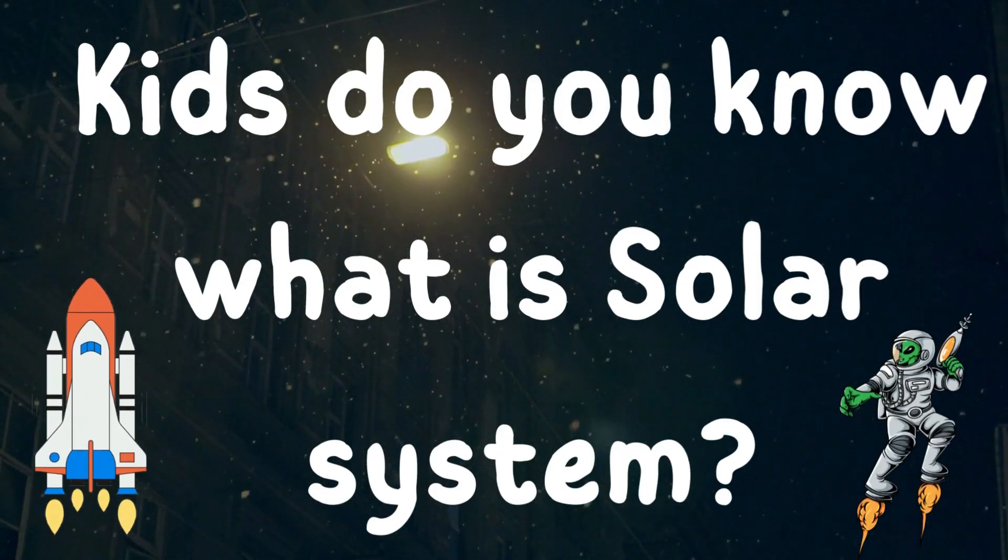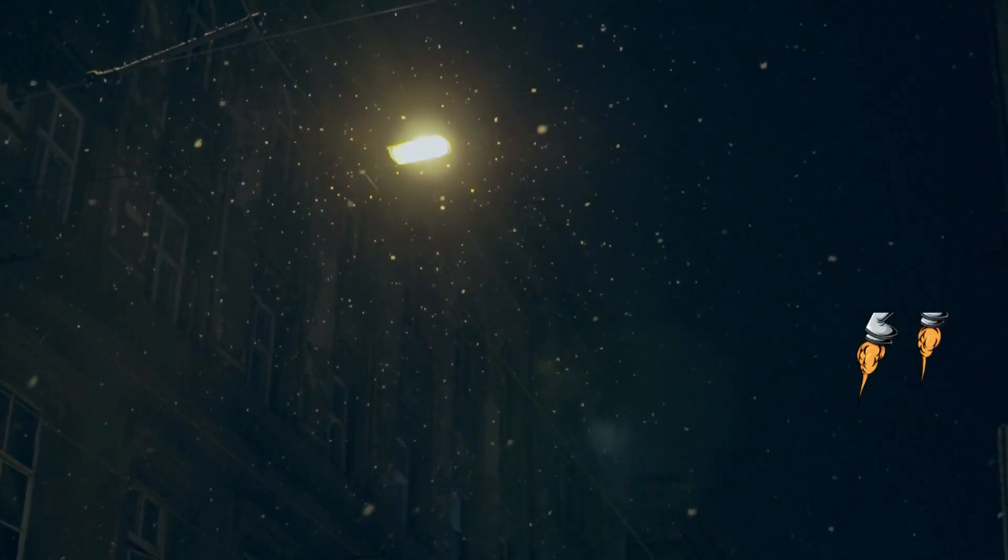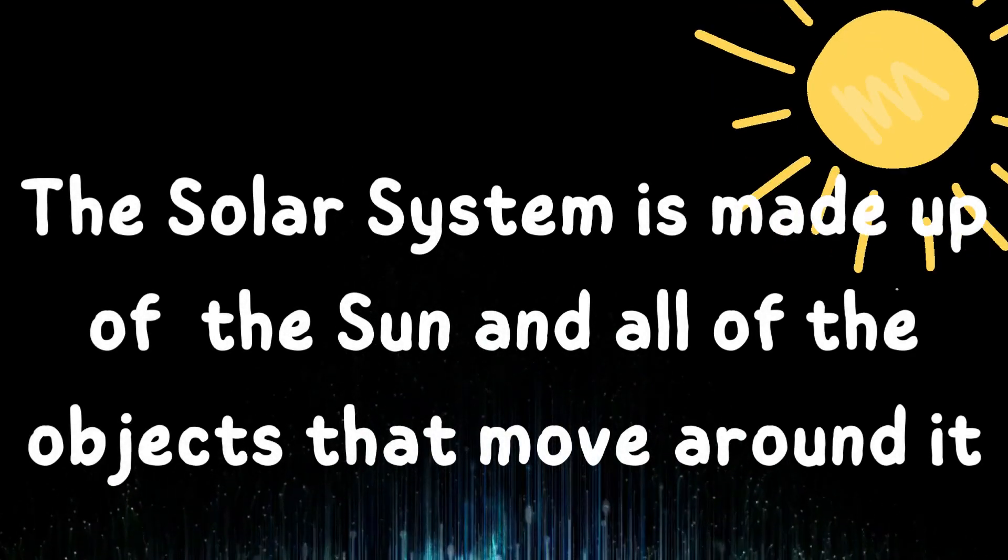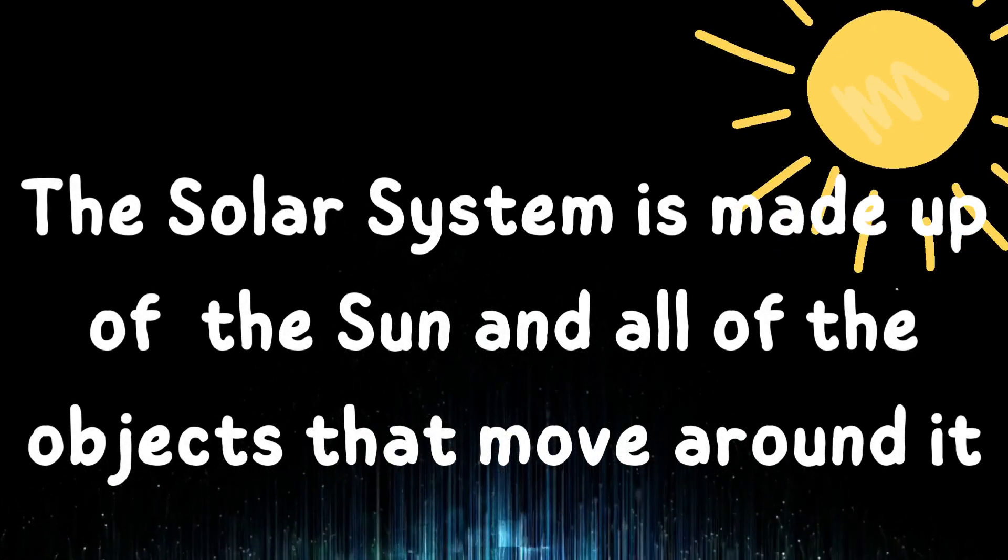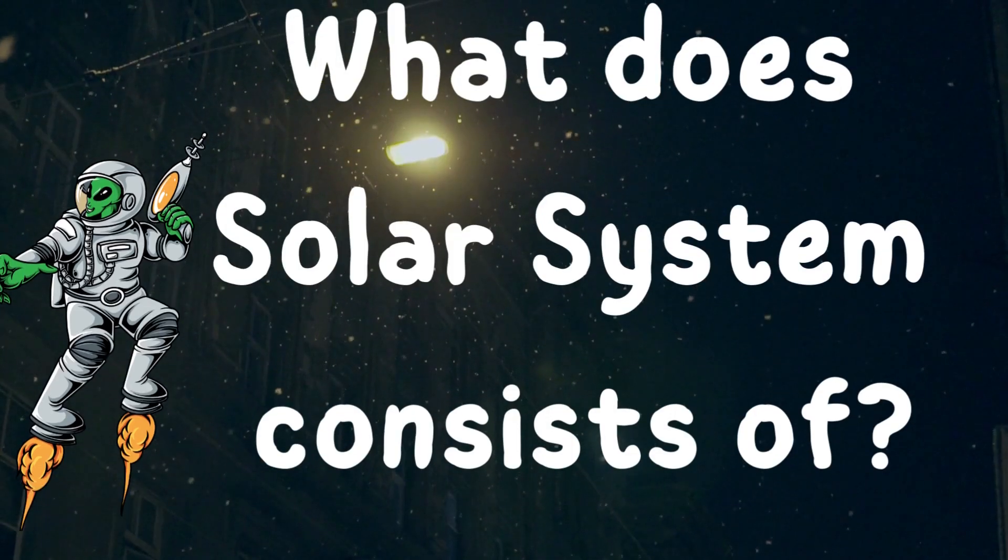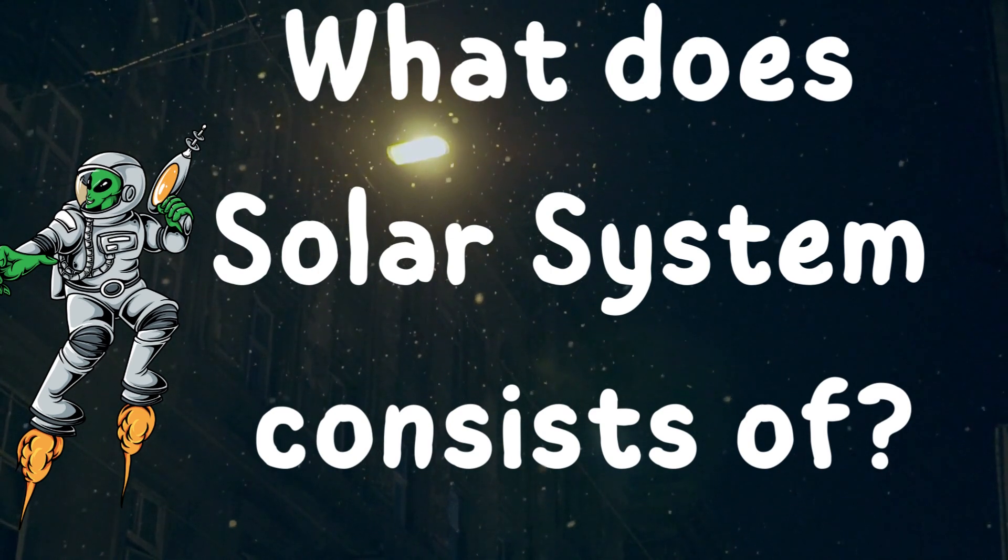Kids, do you know what the solar system is? The solar system is made up of the sun and all of the objects that move around it. But what does the solar system consist of?